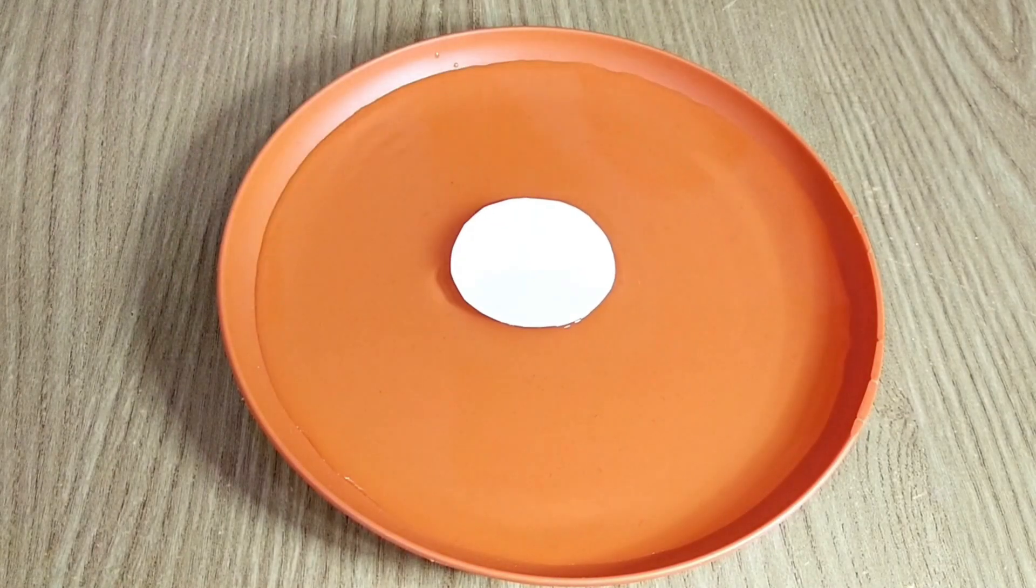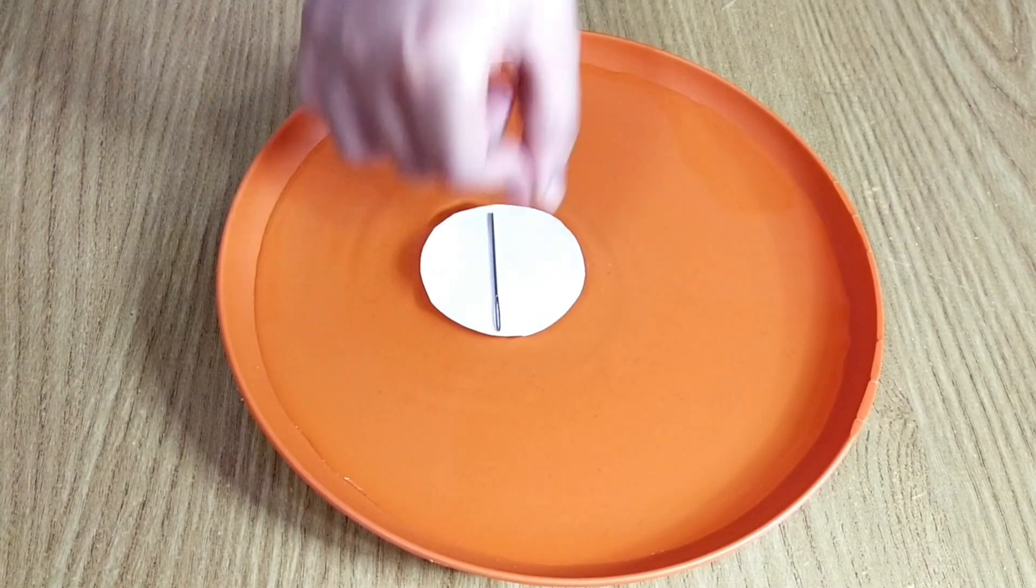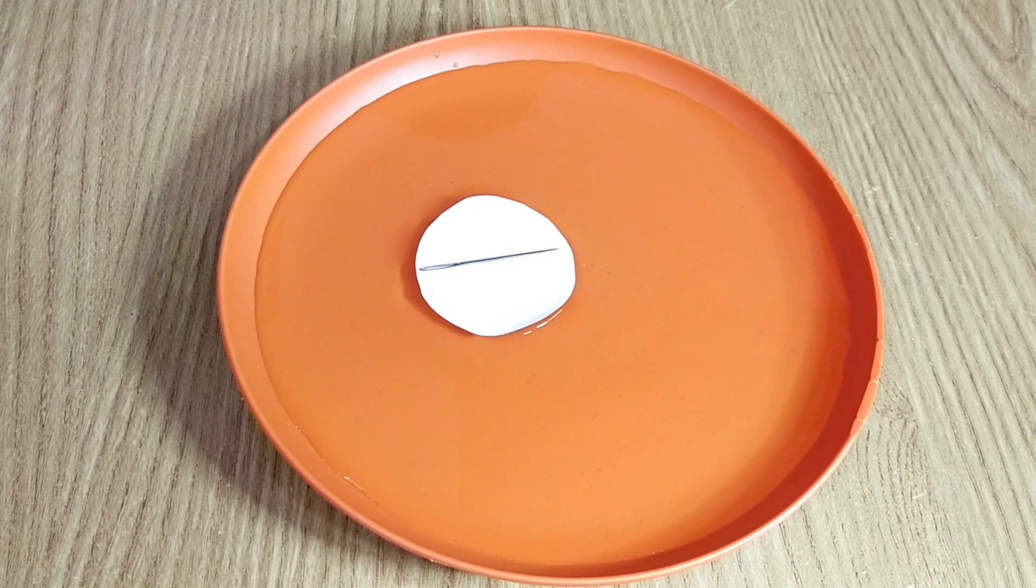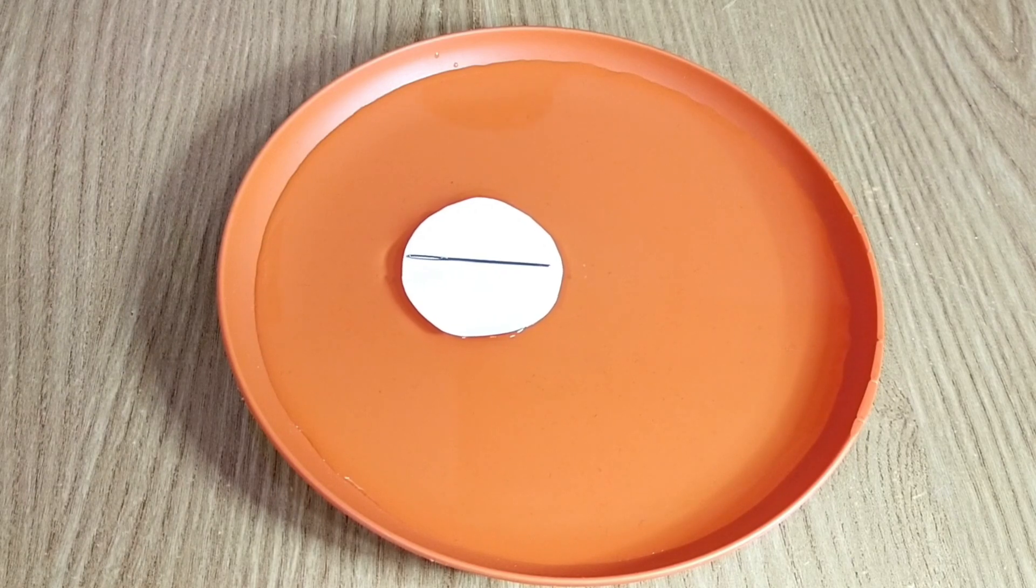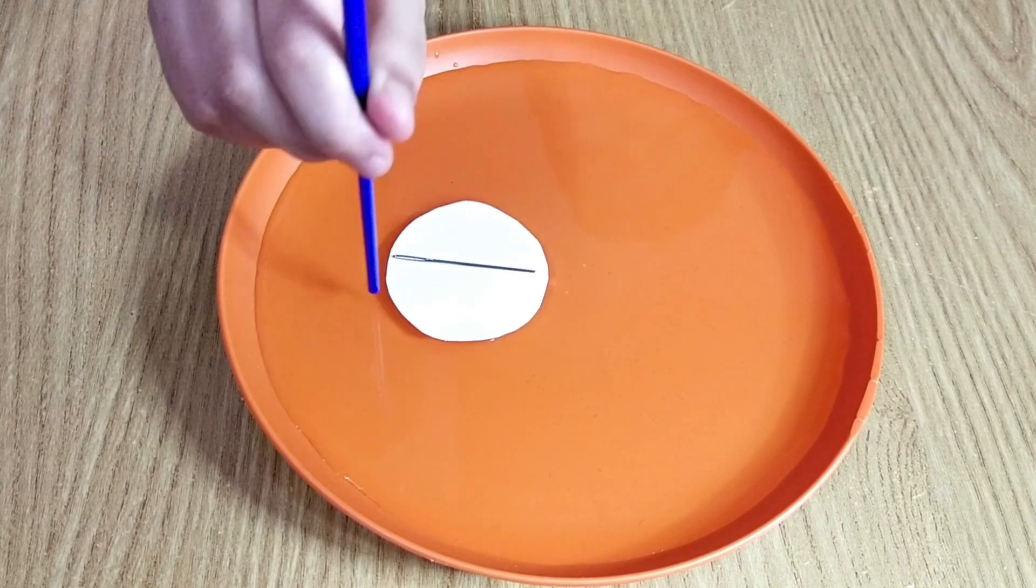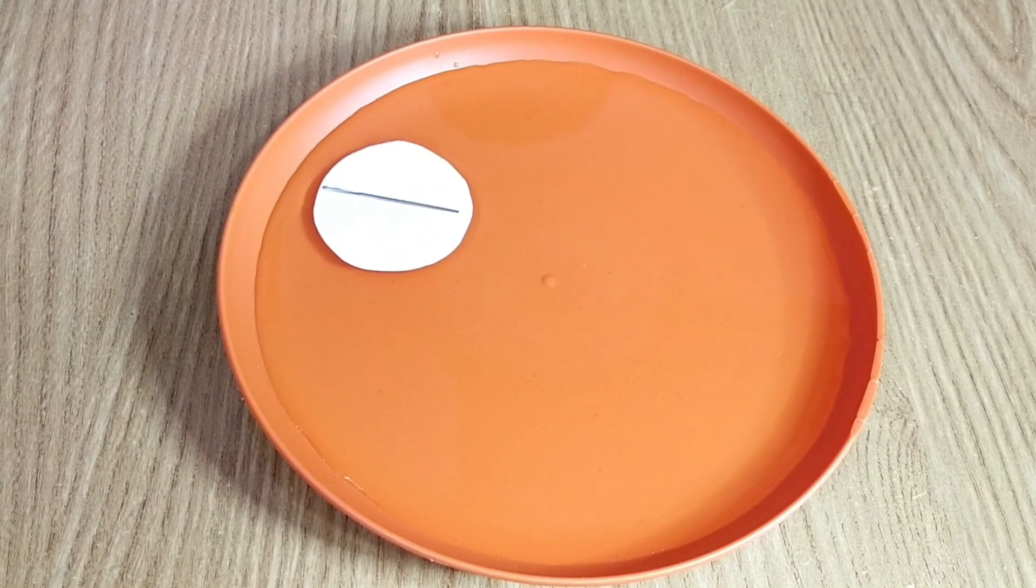Place a piece of paper on the water and then place the magnetized needle on it. Now the paper moves freely in the water until the north and south poles of the needle are in line with the earth's magnetic field. Even if we change the direction, the needle will turn and point towards north.